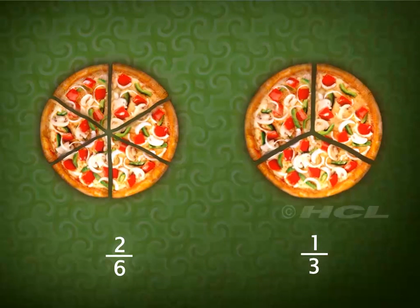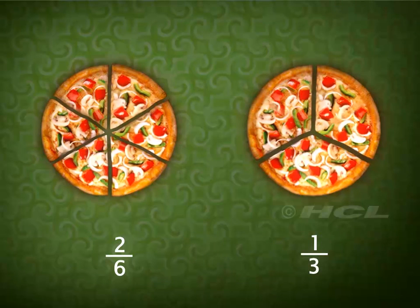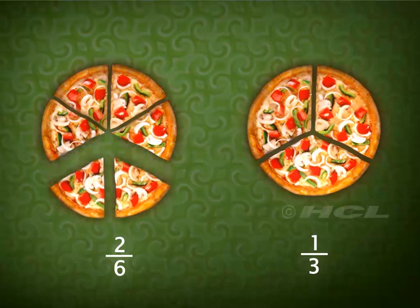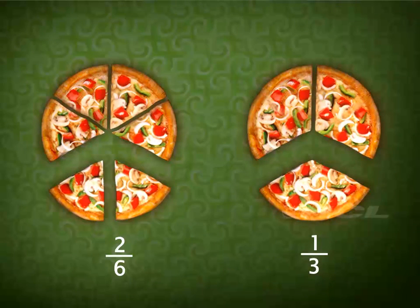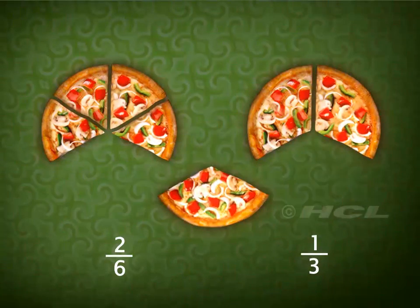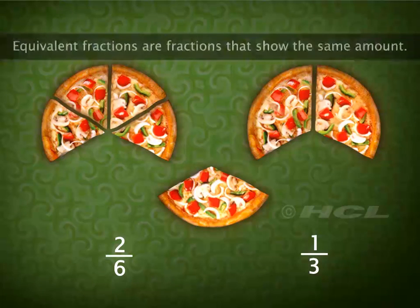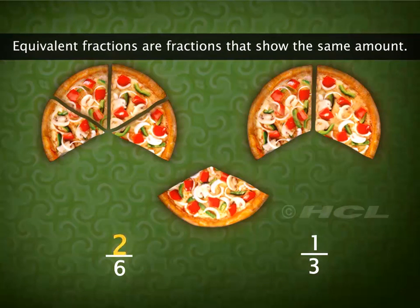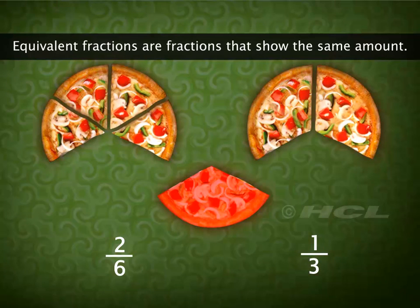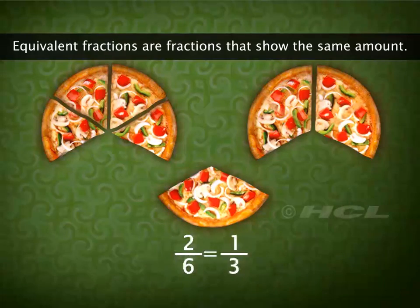But as you can see, the size of the portions that Sam and Sela want to eat are equal in size. This means that fractions two out of six and one out of three show the same amount. Such fractions are called equivalent fractions.